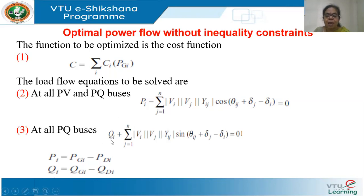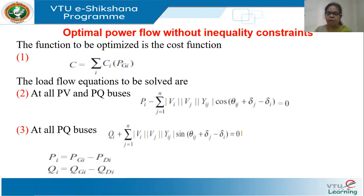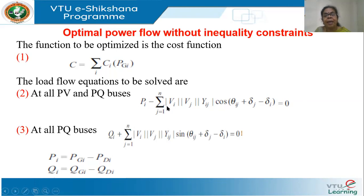At PQ buses, both the active and reactive power equations must hold. You may wonder about the sign convention — in load flow equations, it is easier to formulate PI minus jQI instead of PI plus jQI, as you have seen in Gauss-Seidel and Newton-Raphson methods. So at all PQ buses this equation must be satisfied. The total equations boil down to N minus 1, assuming N buses total, minus 1 because the slack bus is excluded, and the reactive power equation applies only at PQ buses.